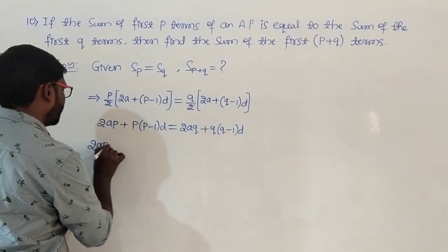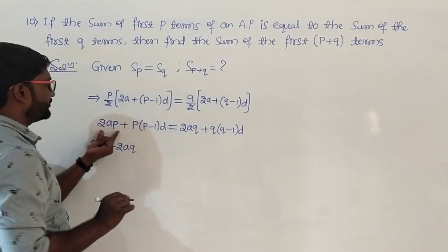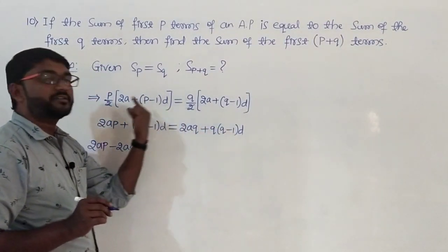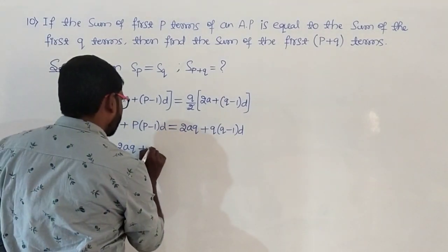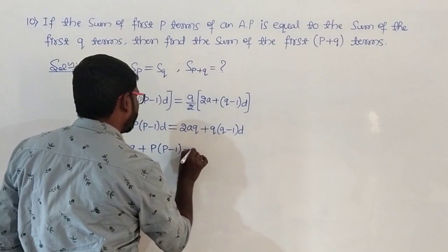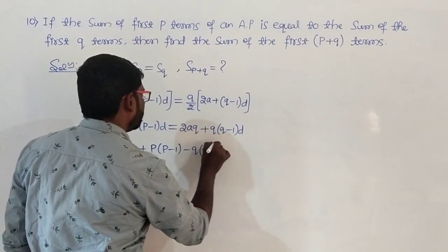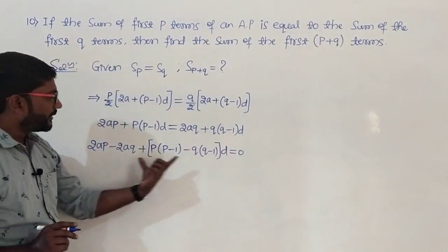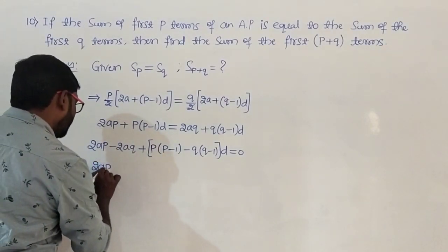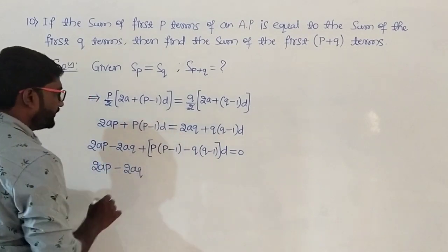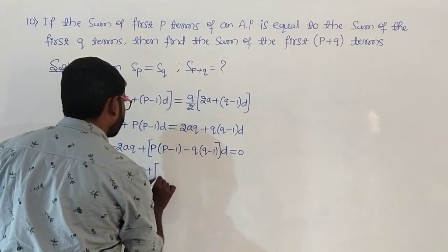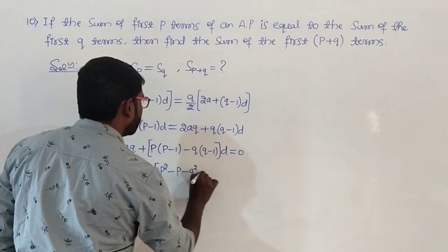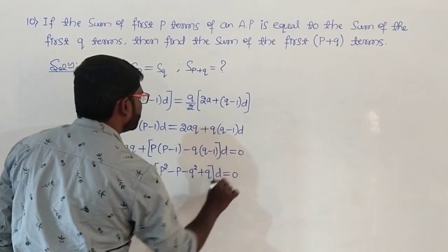We write 2ap minus 2aq plus d times p into p minus 1 minus q into q minus 1 equals 0. Expanding gives 2ap minus 2aq plus p squared minus p minus q squared plus q times d equals 0.